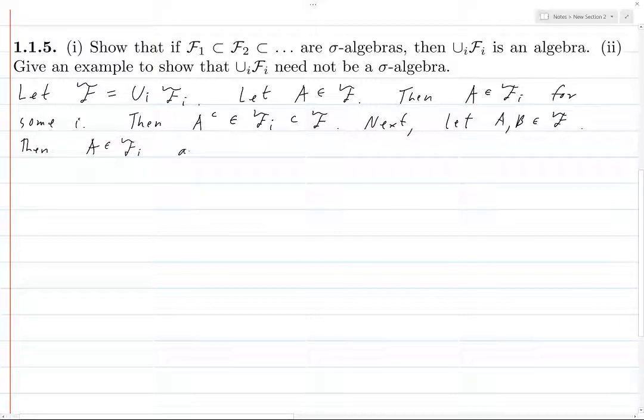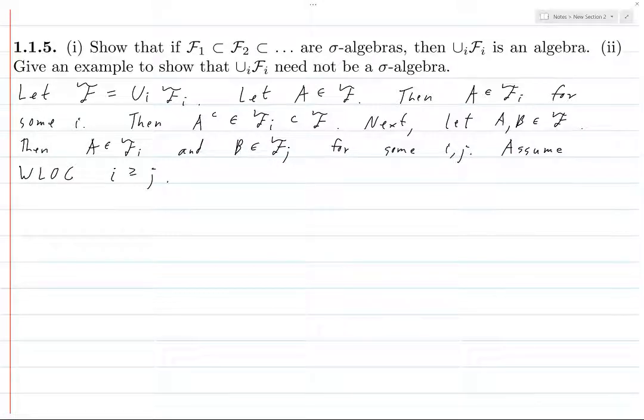Then, similar idea, A is in Fi and B is in Fj for some i and j. And now we're going to assume, without loss of generality, that i is greater than or equal to j. Because certainly, between i and j, one of these indices is the bigger one.